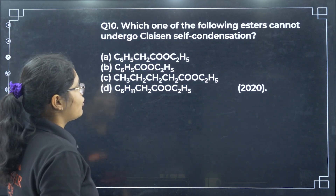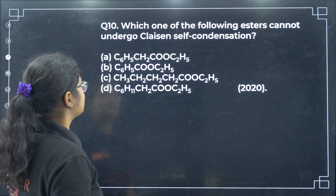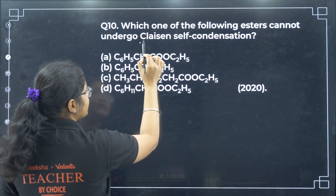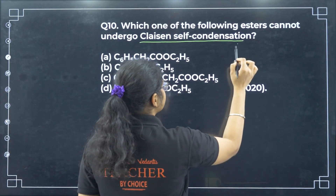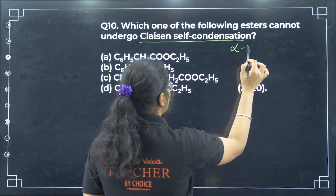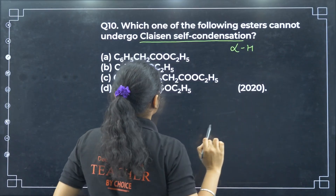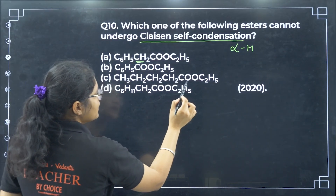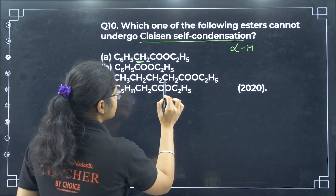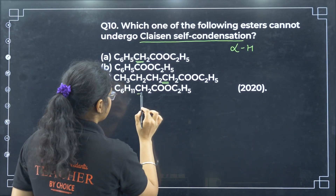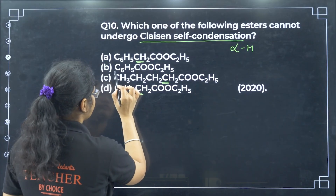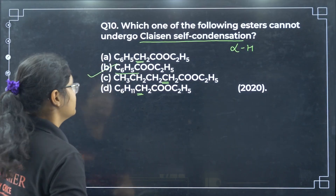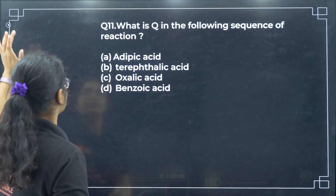Which one of the following esters cannot undergo Claisen self condensation? For Claisen self condensation we need alpha hydrogen. The first three esters have alpha hydrogen. The fourth one has no alpha hydrogen, so it cannot undergo Claisen self condensation — option B.